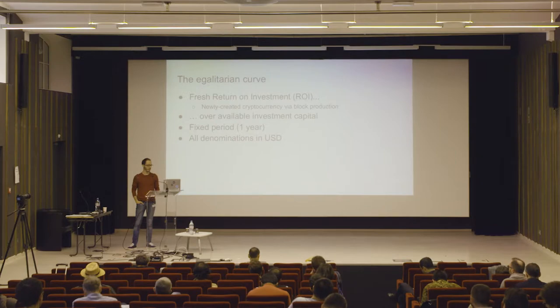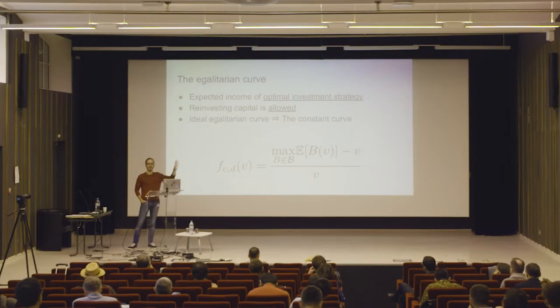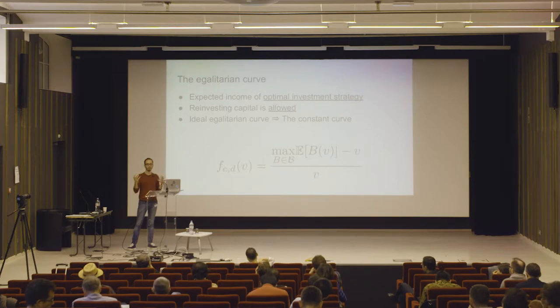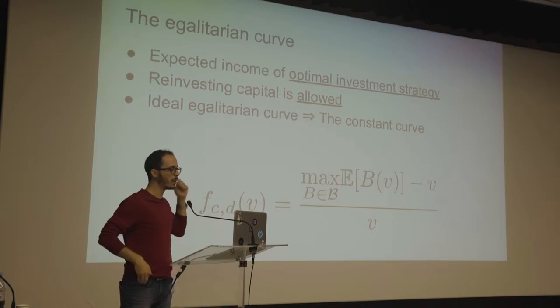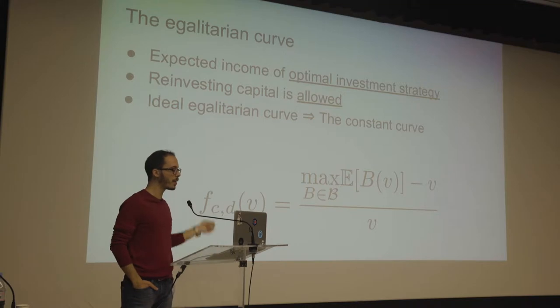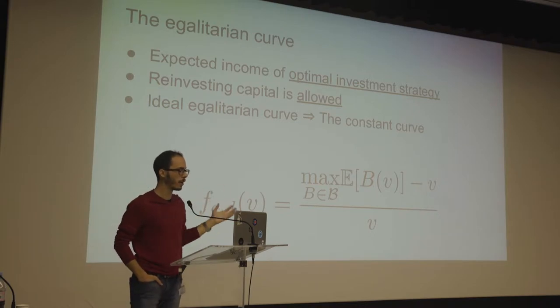This is the function of the curve. The first part is the maximum expectation over all possible strategies. If you have some specific amount of money, you can choose which strategy to follow — allocating money to equipment, electricity, or doing nothing. Taking the maximum over all possible strategies gives the maximum returns achievable with that amount of money: the optimal strategy. Reinvesting capital is allowed in these strategies, so you can take newly mined bitcoins, convert them to dollars, and buy more machines or pay for electricity to keep operations running.